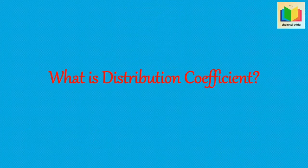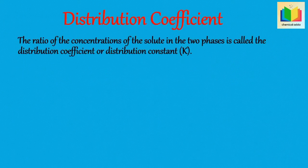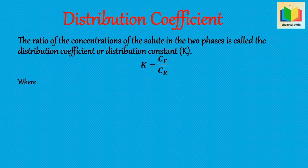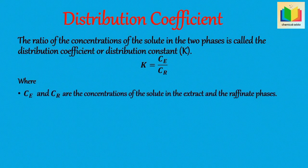What is the distribution coefficient? The ratio of the concentrations of the solute in the two phases is called the distribution coefficient or distribution constant, which is denoted by K. Hence, from the definition, the formula for K, the distribution coefficient, can be written as K = CA / CR.